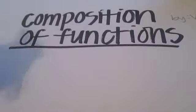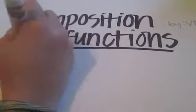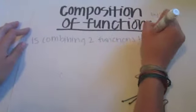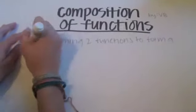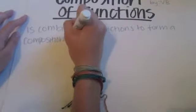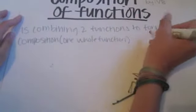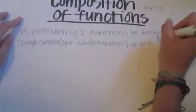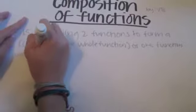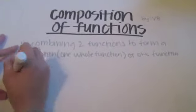Today we're going to learn compositions of functions. A composition of a function is basically combining two functions to form a composition, which is basically one whole function of one function with another. It looks complicated but it really isn't.